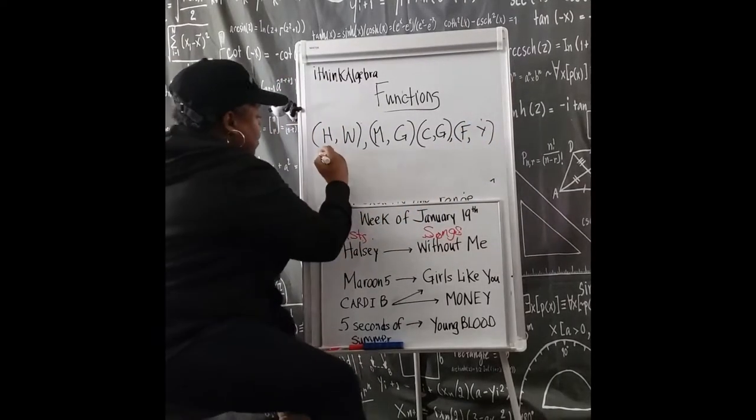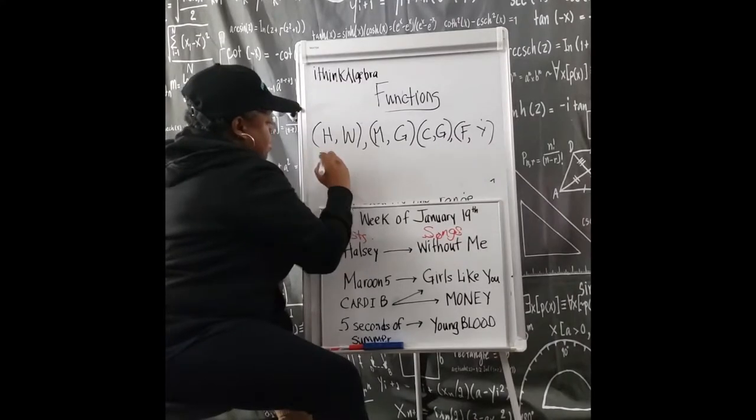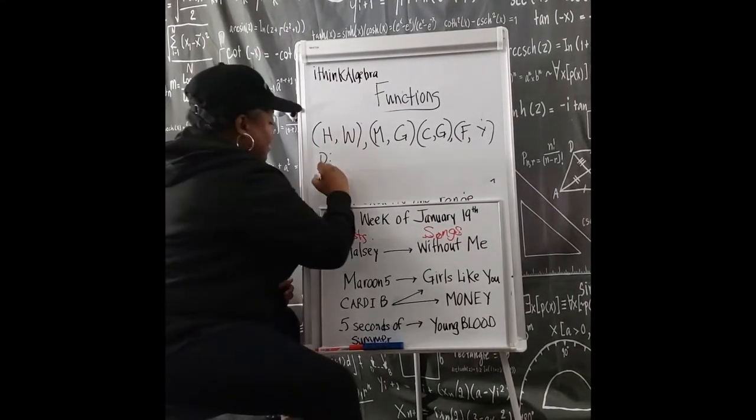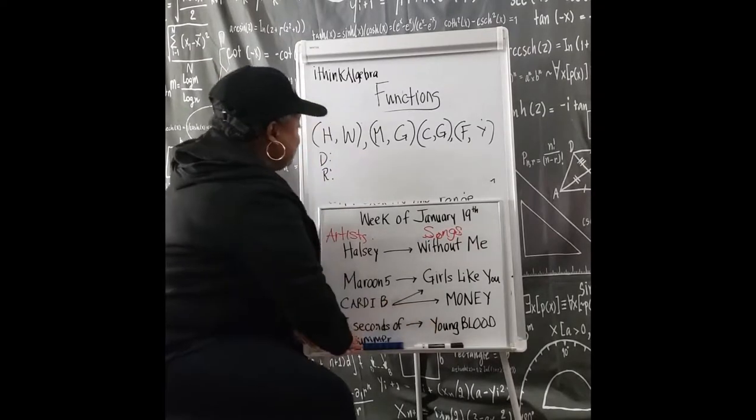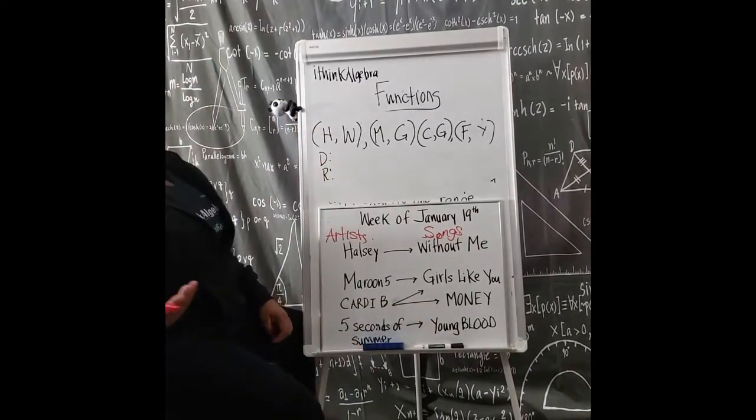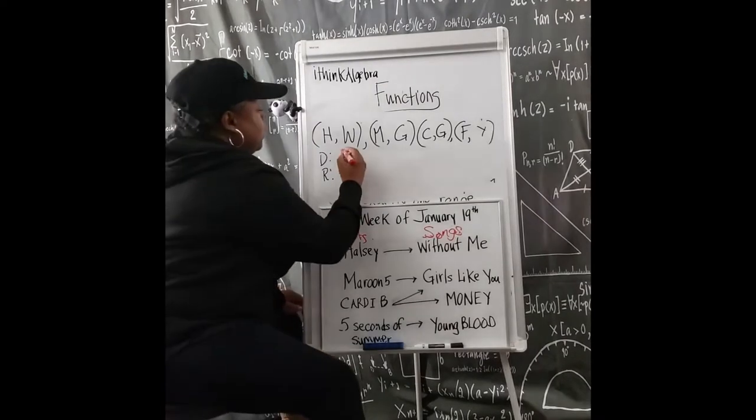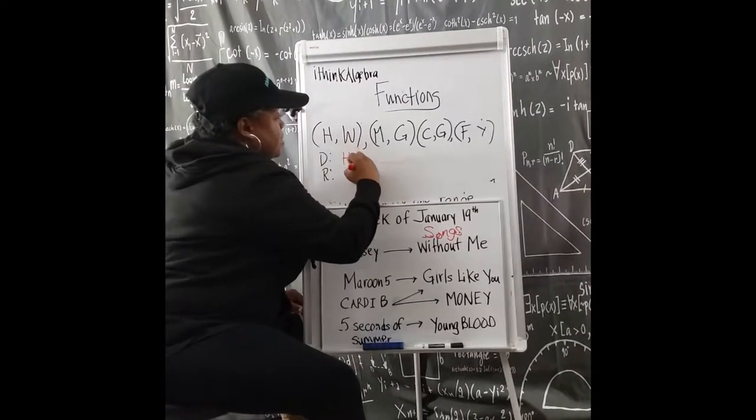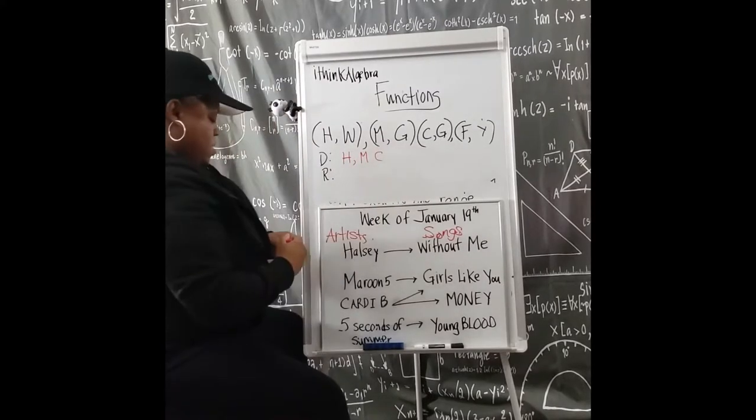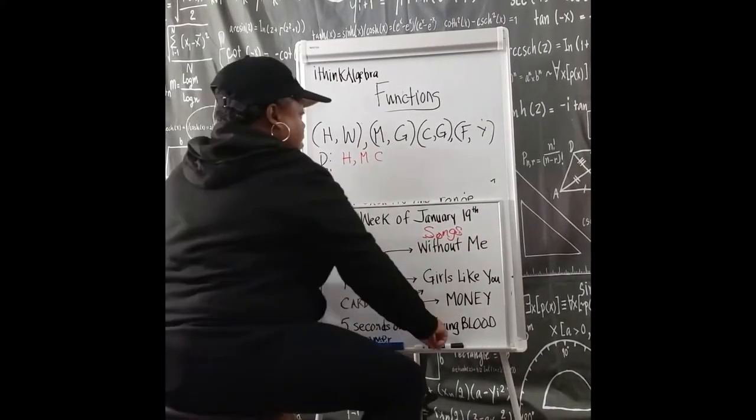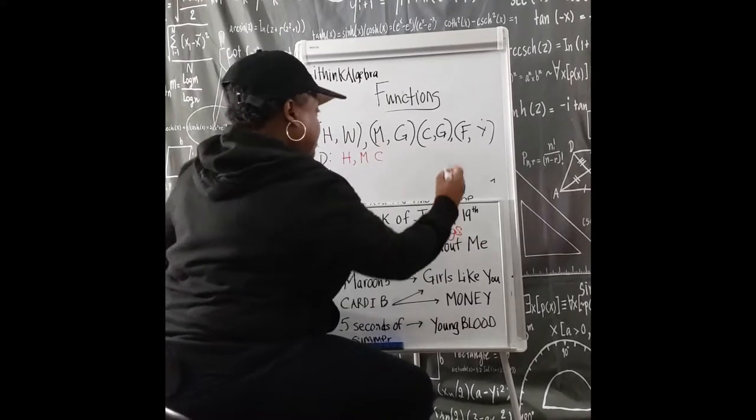Okay. I'm going to write my domain. I'm just going to be lazy and write D and then R. So my domain numbers are variables, whatever. It's H, M, C. See, I forgot Cardi B in there. I squeeze that in there.